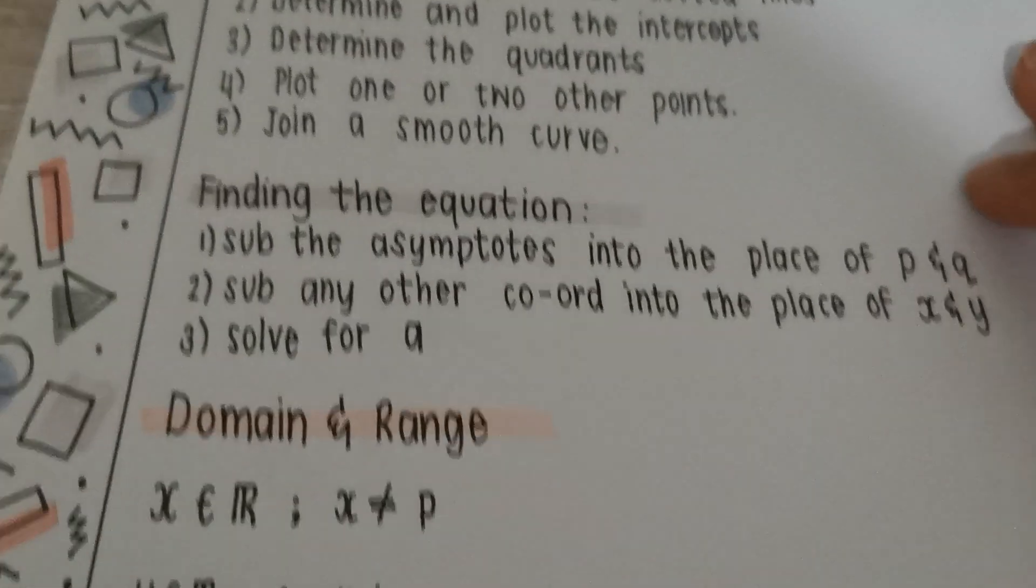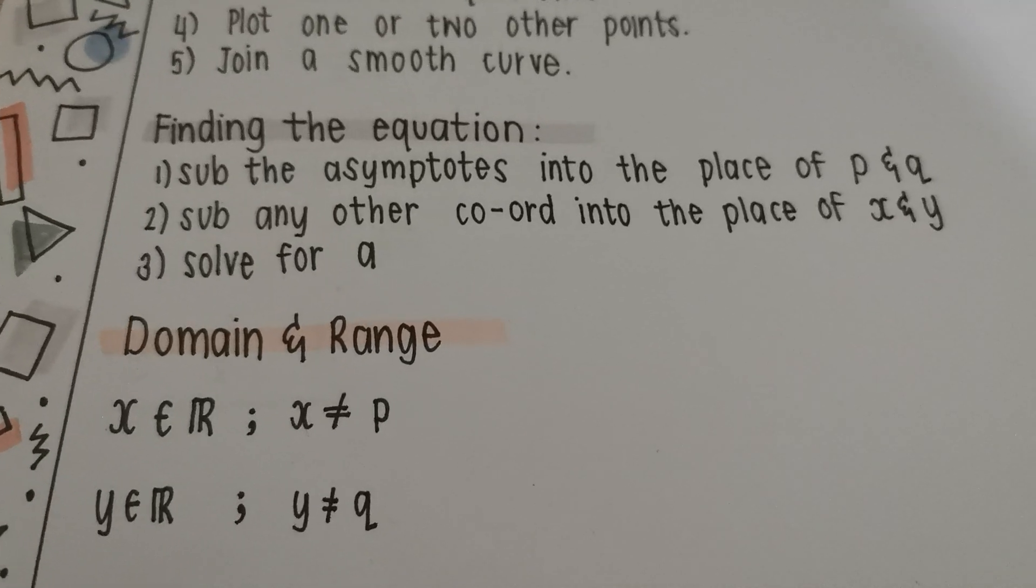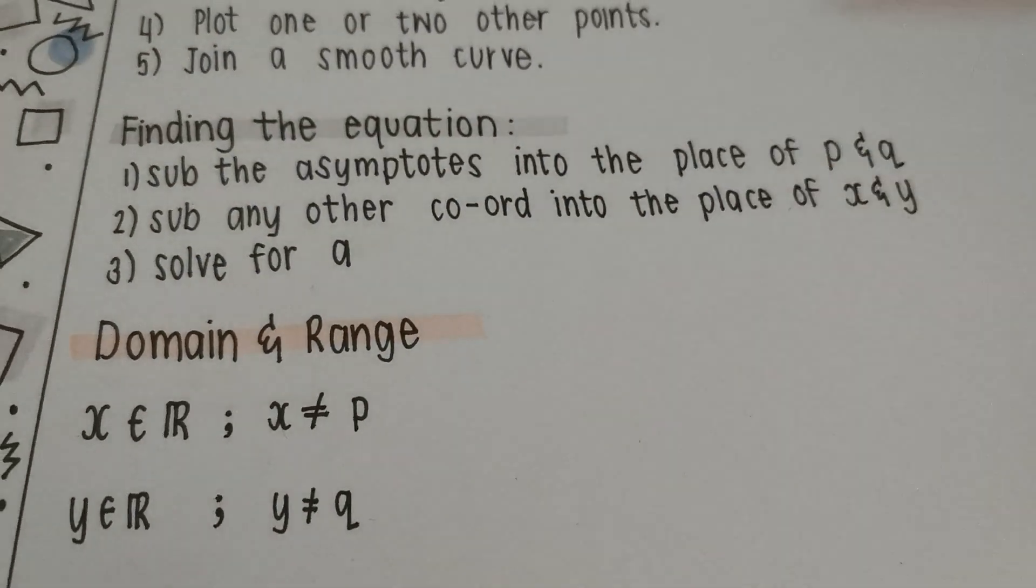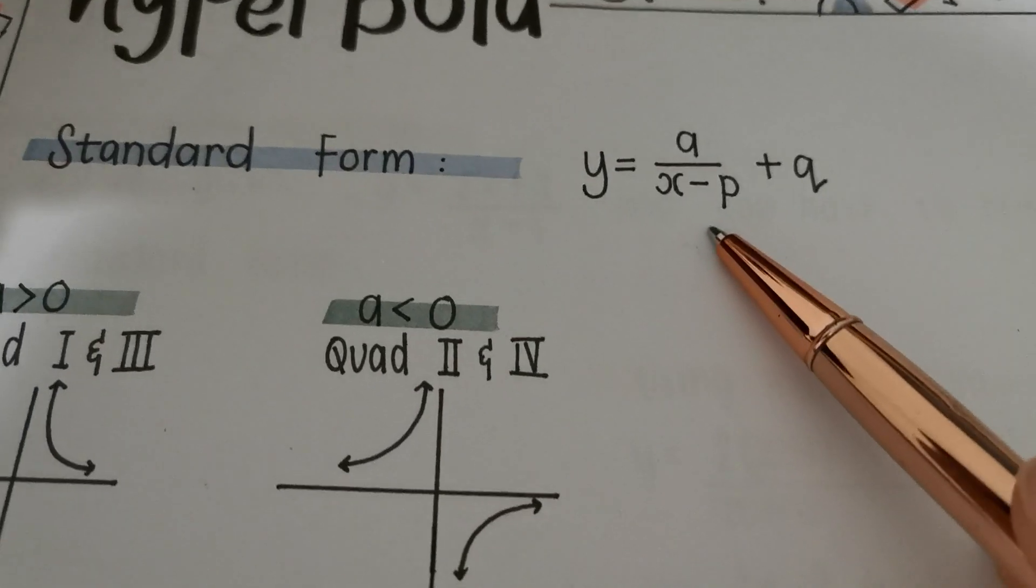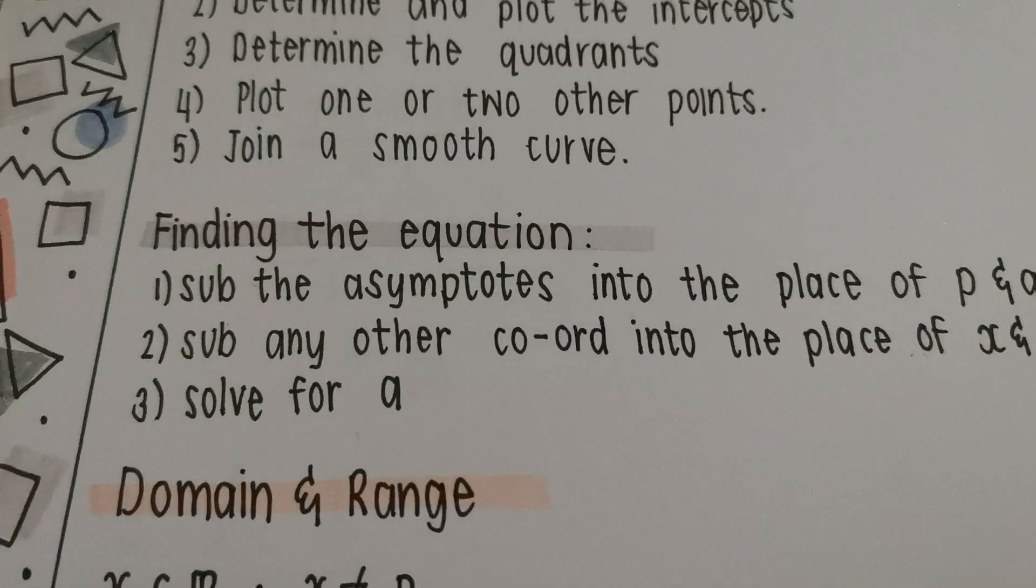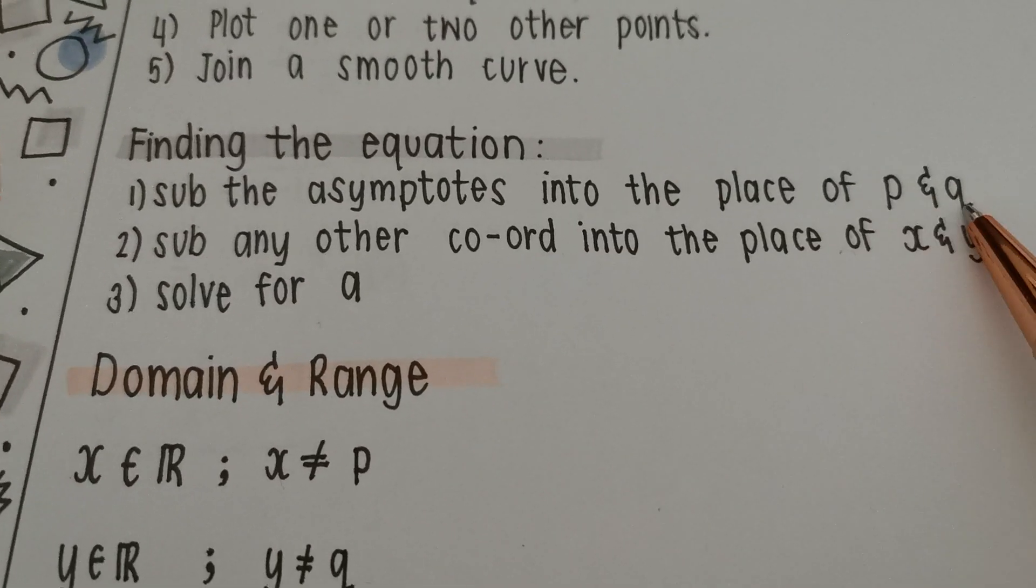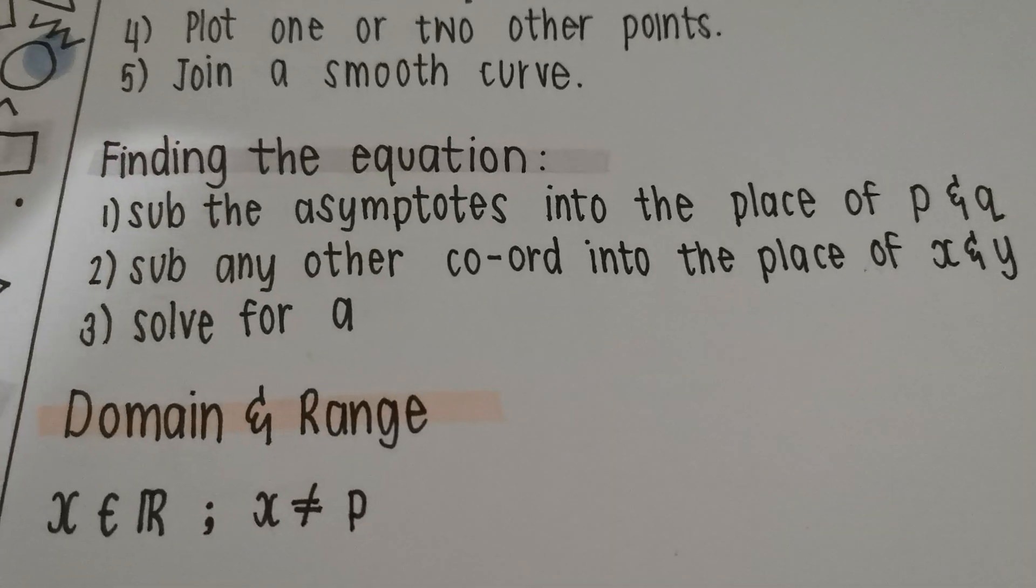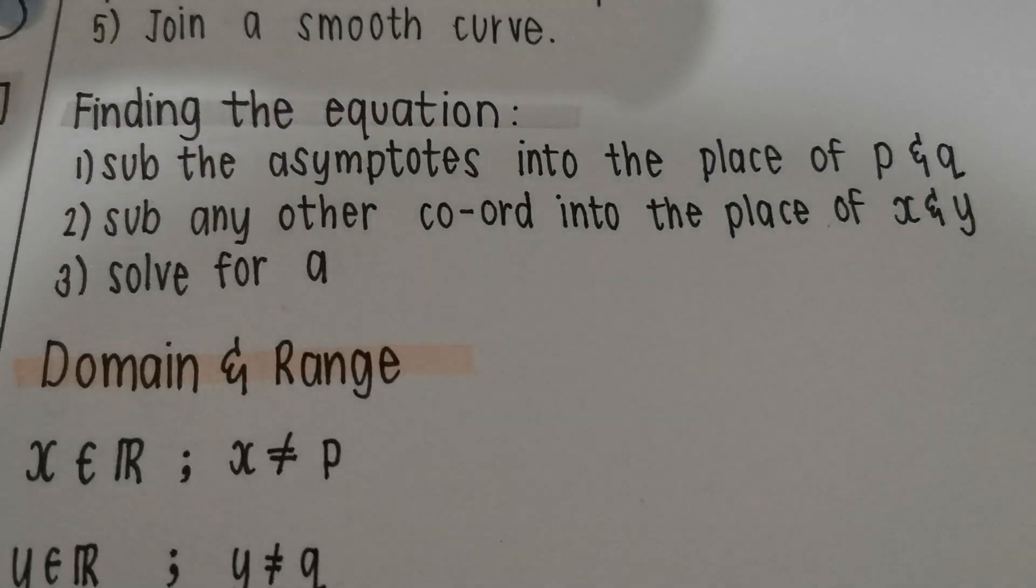All right, we're moving on to finding the equation. All right, this one here is quite easy. When we say find the equation, what I want you to do is you fill in the asymptotes. We already discussed this is the p-value. It's the asymptote. This is an asymptote. So you fill in the asymptotes into the place of p and q. You fill in one other coordinate, and you solve for a. All right, let's try that out.